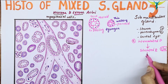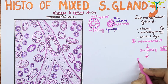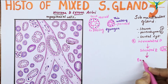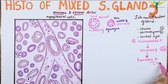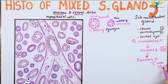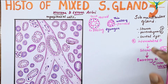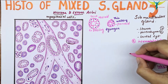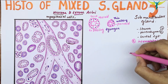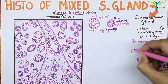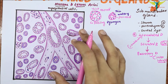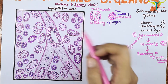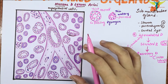These striated ducts open into the excretory ducts. The excretory ducts are the interlobular component, whereas the intercalated ducts and the striated ducts are the intralobular component. Now coming to the labeling and the ducts of this diagram.